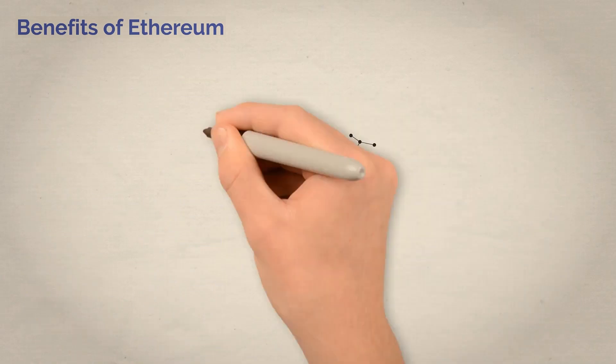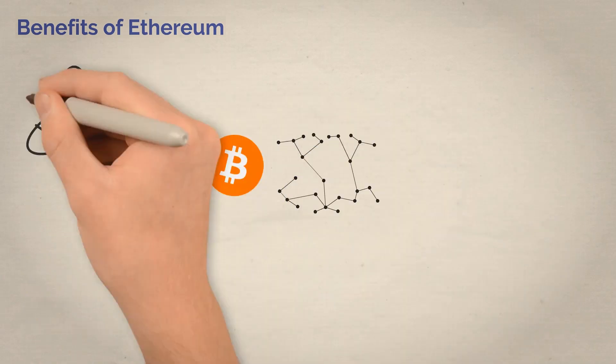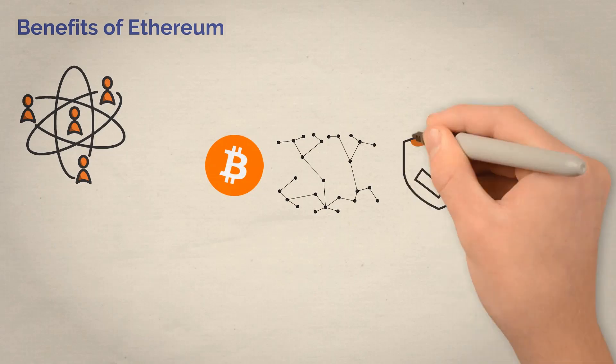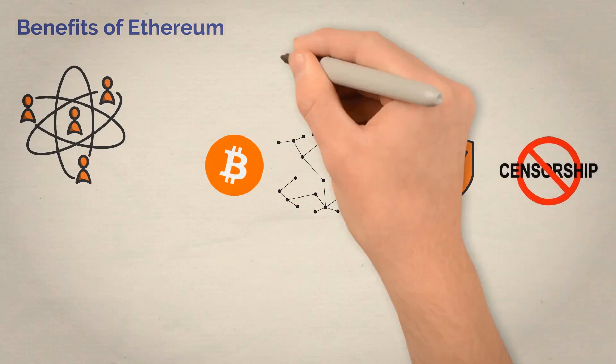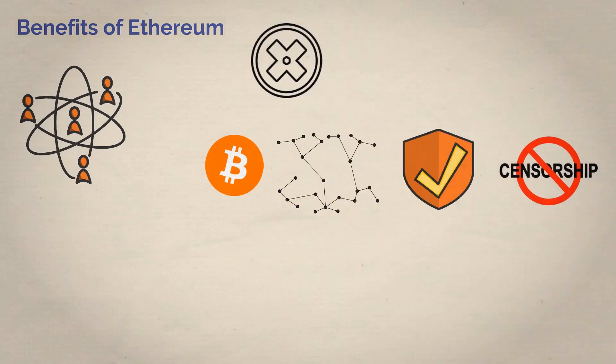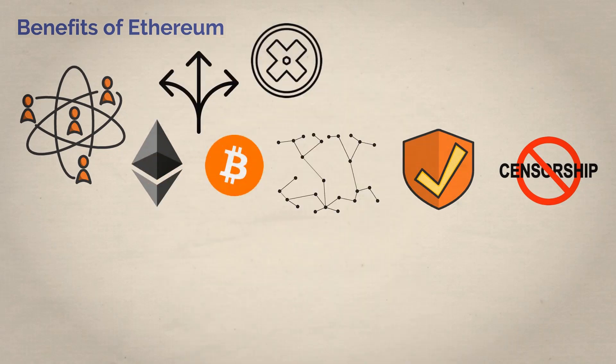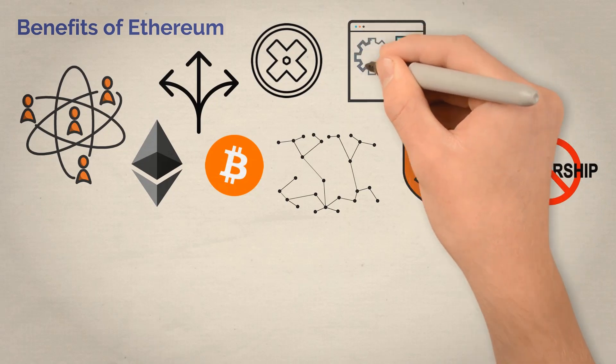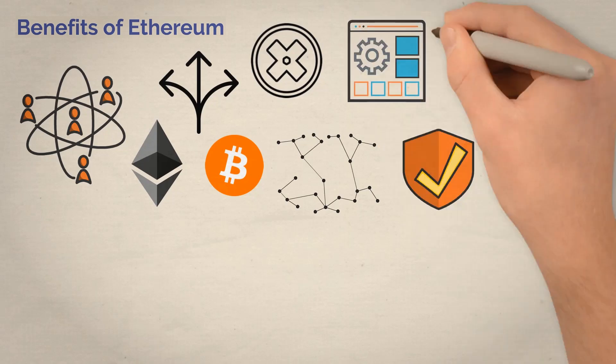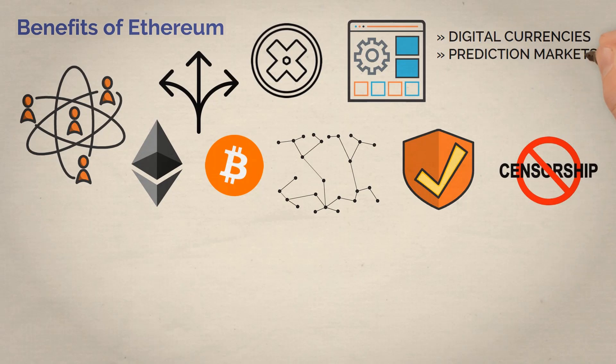Another one is that it's decentralized, like Bitcoin. That means no single entity controls it, which makes it more secure and resistant to censorship, as there is no central point of failure. But one of the best things about Ethereum is that it's super flexible. Developers can build all kinds of decentralized applications on it, like digital currencies, prediction markets, games, NFTs, and more.